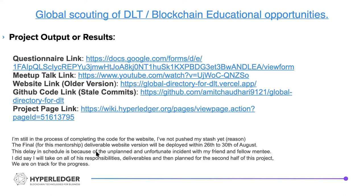These are the project output and results — basically links. There is a disclaimer: I'm still completing the code for the website and have not yet pushed my commits to GitHub. The final deliverable for the website I was targeting between the 26th and 30th of August. This delay is because of the unplanned and unfortunate incident with my friend and fellow mentee Jenming — I said I would take all of his responsibilities and we are still on track, just within that adjusted plan.